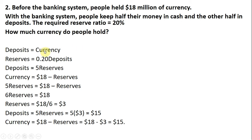One of the key things here is deposits equal currency — that's just coming from this question. People keep half their money in cash and the other half in deposits, so deposits equals currency. And with a required reserve ratio of 20%, reserves will equal 0.2 times deposits. Solving for deposits: deposits equals 5 times reserves.